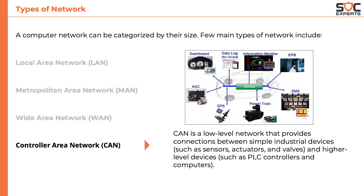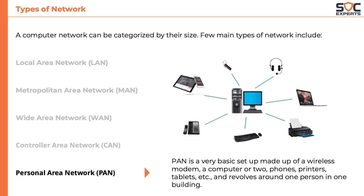Next we have Personal Area Network, or PAN. PAN is a very basic setup made up of a wireless modem, a computer or two, phones, printer, tablets, etc., and revolves around one person in one building. When you connect your mobile phone to a computer or a headphone via Bluetooth, it is a Personal Area Network.